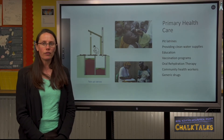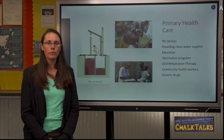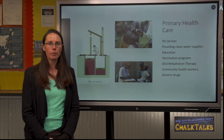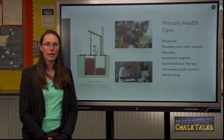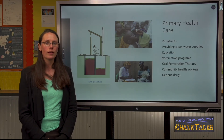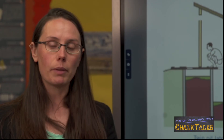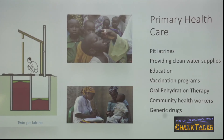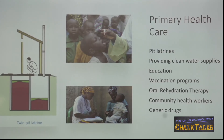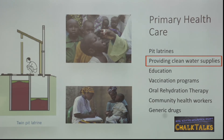The final part of this unit looks at primary health care — measures taken by developing countries to improve the health of as many people as possible. You need to be able to describe different methods and explain why they're effective. Primary health care includes anything that improves people's health, such as providing clean drinking water and sanitation.